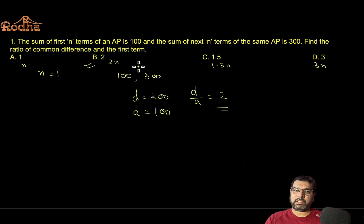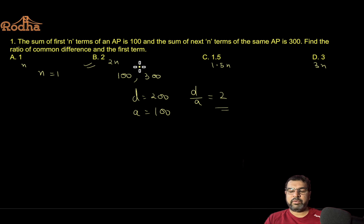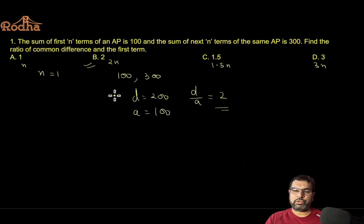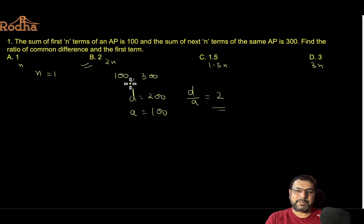This is a general trick applicable to many, many CAT questions — especially series questions in AP, GP, HP, and miscellaneous series. That's the first trick. Let's move to the second question.